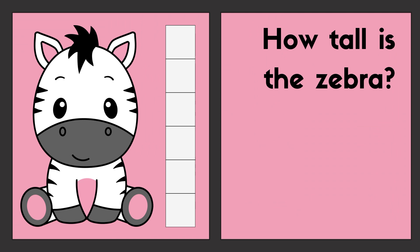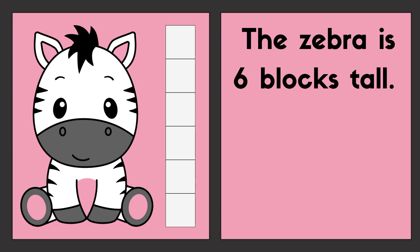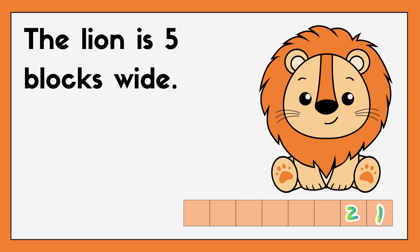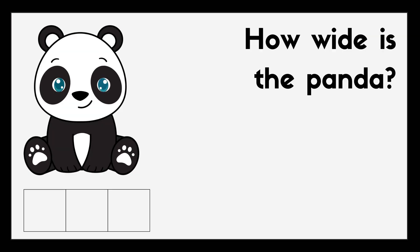How tall is the zebra? Let's count. One, two, three, four, five, six. The zebra is six blocks tall. How wide is the lion? Let's count. One, two, three, four, five. The lion is five blocks wide.